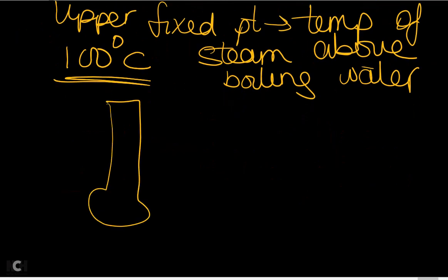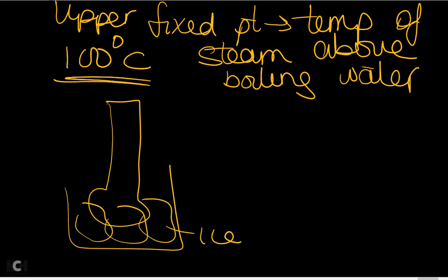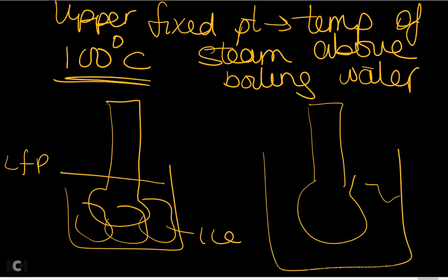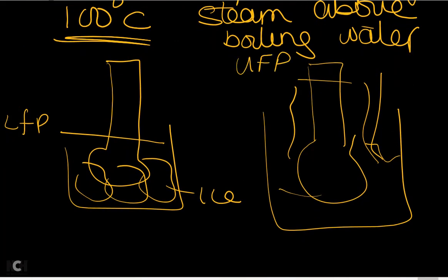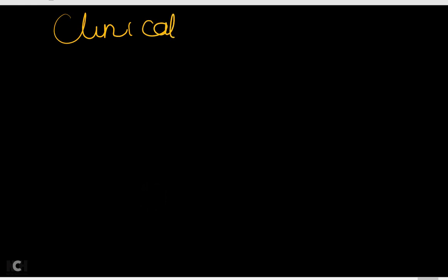To calibrate: place the thermometer bulb in ice to get the lower fixed point, then place it in steam above boiling water for the upper fixed point. Once you have both values, you measure the length between them and divide it into 100 equal divisions — this is the centigrade scale, meaning 100 divisions.